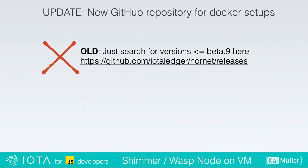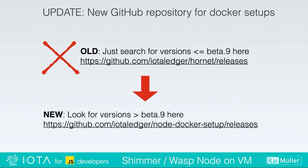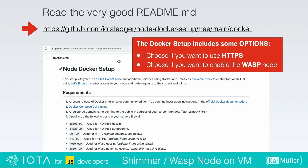The first thing we need to know is where we can find the node Docker setup, and this repository has changed. Please use the new link which is located under the repository of IOTA under node-docker-setup/releases. You will find very good documentation on how to configure your setup, because with this release you can now use some options. You can choose if you want to use HTTP or HTTPS, and you have the choice if you want to set up only a Hornet node or if you want to enable an additional WASP node.